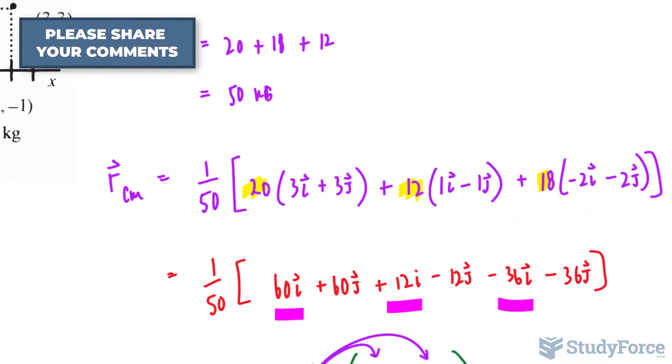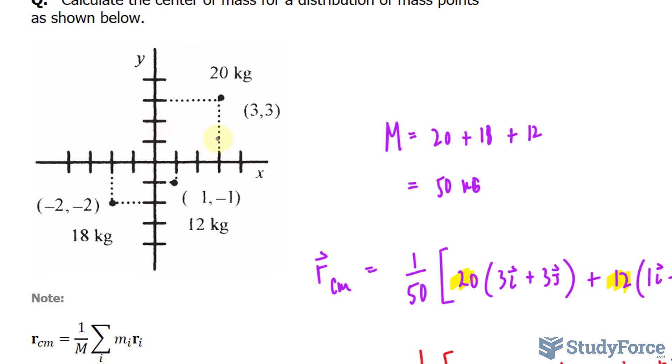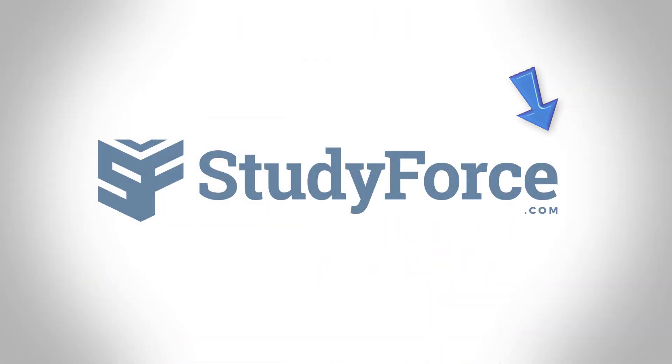If we were to put this into this plane here, 0.72 and 0.24 is around here, somewhere here. So somewhere here is the center of mass for these three points, and that is how to calculate the center of mass.